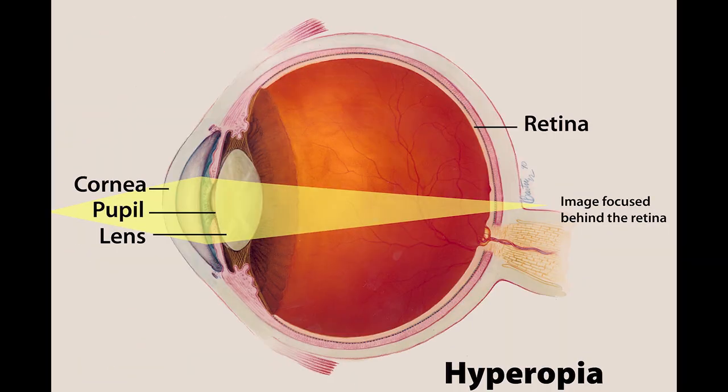Let's imagine somebody who is farsighted and cannot use their eye muscles at all, looking in the distance. In that case, the light being focused inside of the eye is being focused too weakly — it's not strong enough, and the light is actually focused behind the retina. Or it could be that the eye itself is too small, and the light again is focused behind the retina, not giving a clear image. In that case, somebody is prescribed plus lenses — magnifying lenses that actually help move that light forward toward the retina, giving them clear vision.